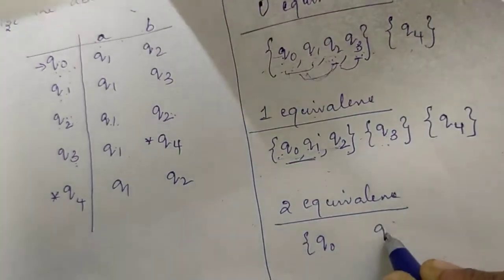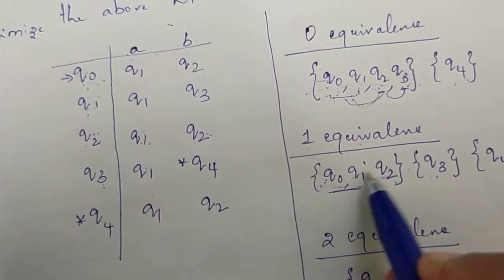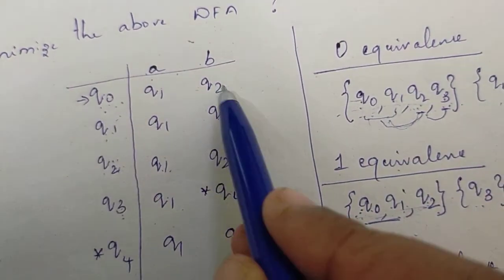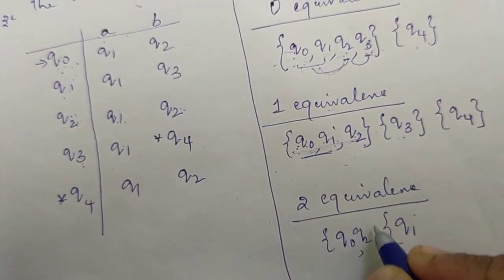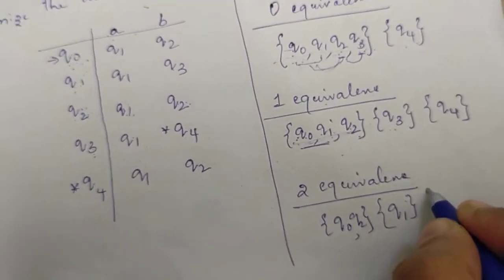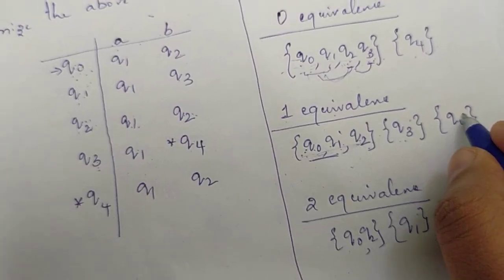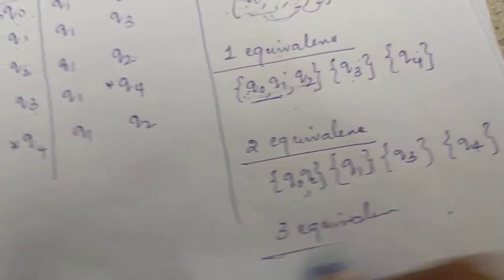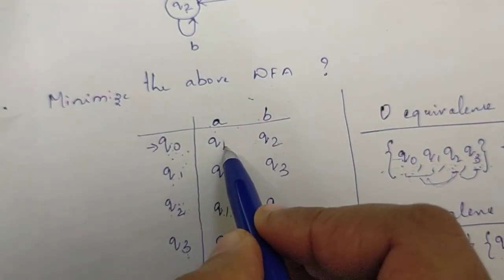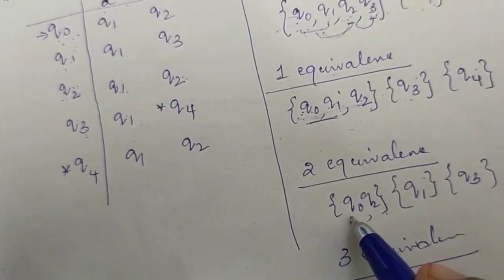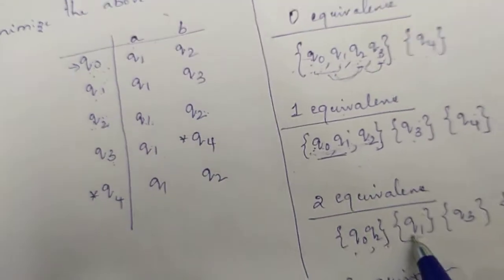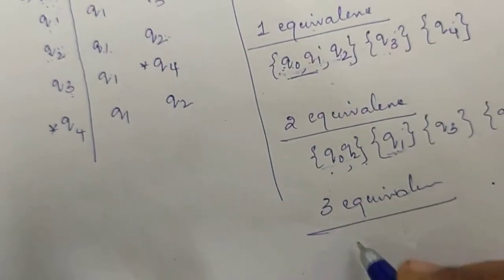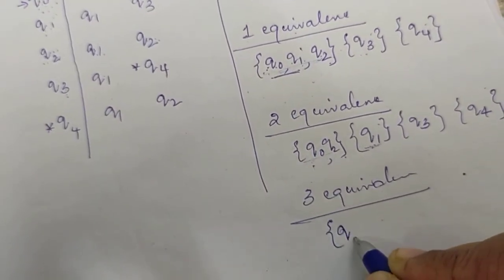So Q0 and Q1 are separated. Next, checking Q0 and Q2: Q0 and Q2 go to the same set on both inputs, so Q0 and Q2 form one set. Q1 is its own set. Q3 and Q4 are separated into individual sets. Q0 and Q2 on A goes to Q1, which is in the same set, and Q0 and Q2 on B goes to Q2, also in the same set.